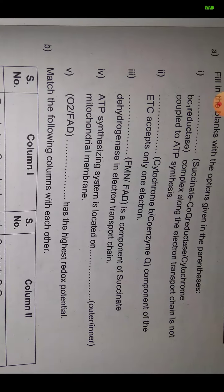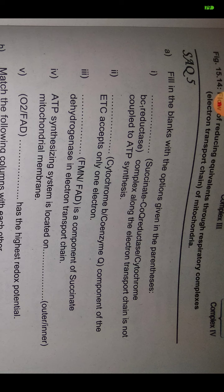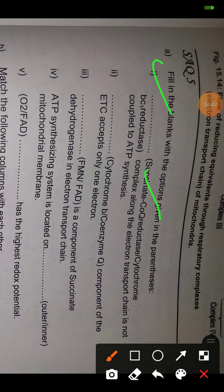Now the fifth question is fill in the blanks with the options given in parentheses. Succinate CoQ reductase, also known as cytochrome bc1 or complex II, is not coupled to ATP synthesis. The answer for the first blank is succinate coenzyme Q reductase. The component of the electron transport chain that accepts only one electron is coenzyme Q. The third blank: the component of succinate dehydrogenase in the electron transport chain is FMN.